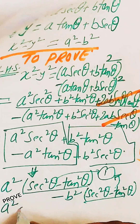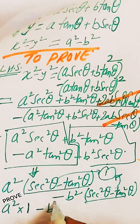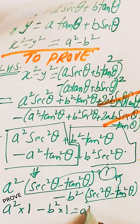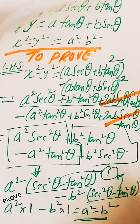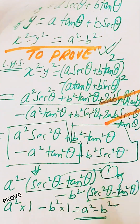We are left with a²·1 minus b²·1, which equals a² minus b², and that is the RHS. Hence proved: x² - y² = a² - b².